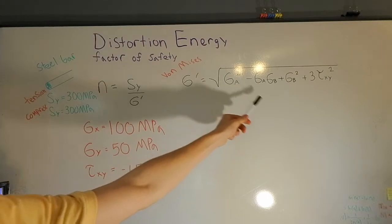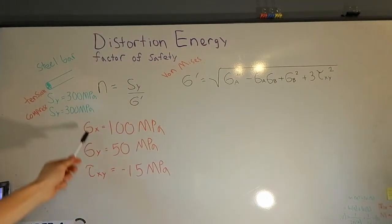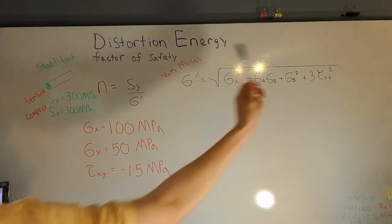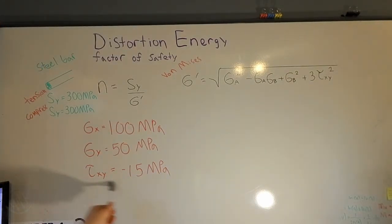So if you see sigma a or sigma b, that's the same thing as sigma x or sigma y. Those will be interchangeable. And then we've got tau xy on the end there, which we have down here. But these can be expressed in either a, b, or x, y.